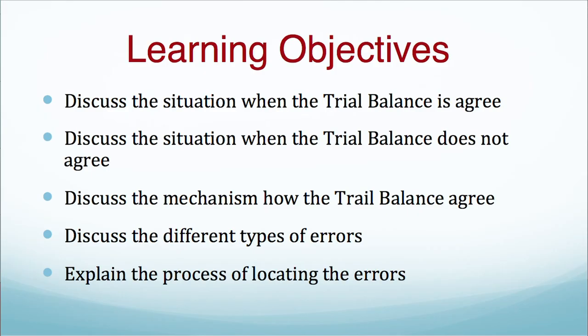Let us move to the main topics we are going to discuss in this video. After this video, we will be able to know the situations when the trial balance agrees, as well as when the trial balance does not agree. The important part is the mechanism — how the trial balance becomes agreed. We will discuss the different types of errors, as well as how to locate the errors, and how the trial balance gives us an automatic indication towards the correctness of the records we have maintained.